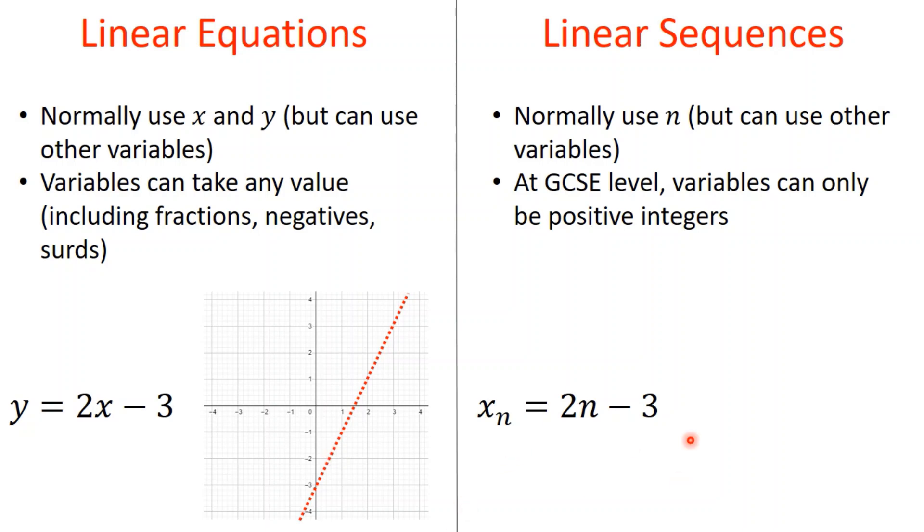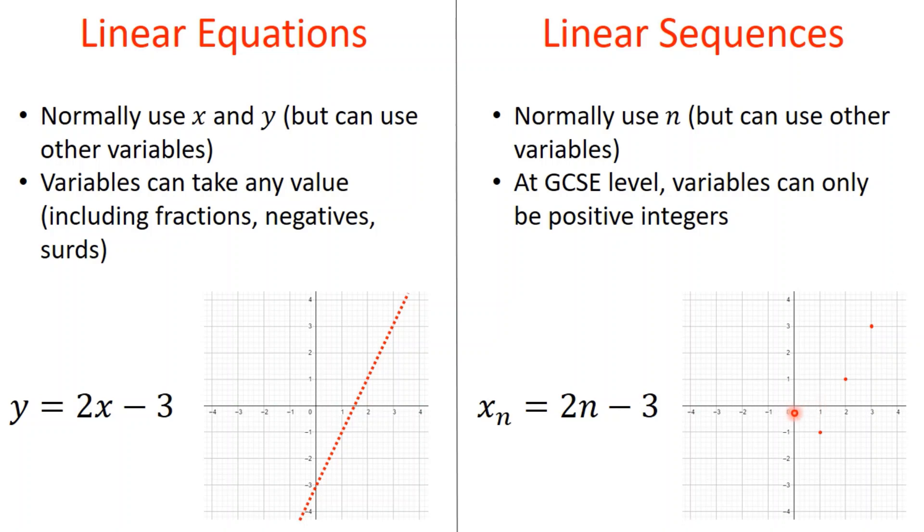Whereas with a sequence, I'm only interested in when n is a positive integer. So I'm only actually interested in a few points where the x is positive and integers. In this case, I don't care what xₙ would be when n is a half because we can't have a half term in a sequence. It doesn't make sense. We count up the first term, then the second term, then the third term. So we're only interested in the positive integers here. Whereas with an equation, we want all the information in one go.